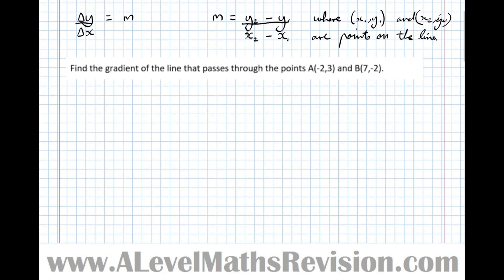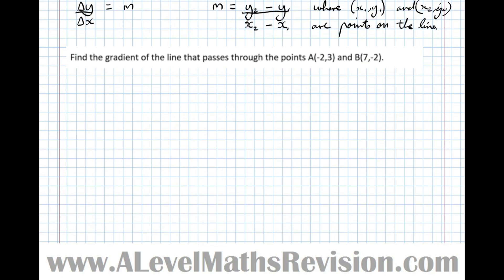Let's put that into practice. This example question: find the gradient of the line that passes through the points minus 2, 3 and 7, minus 2. So x1, y1 is one point on the line, so this is coordinate x1 and the corresponding y coordinate is y1. Likewise, this is x2 and this is y2.